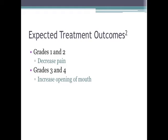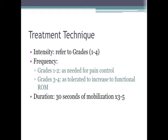In summary, primary outcomes with grades 1 and 2 mobilization include a decrease in pain, and with grades 3 and 4, an increased range of motion. The intensity refers to the grade of mobilization being provided and will be dependent on your desired outcomes. The frequency for grades 1 and 2 is as needed for pain control, and for grades 3 and 4, as tolerated or until there are no longer any improvements. Treatment is initially performed for 30 seconds and then reassessed, continuing to mobilize 3 to 5 times, increasing the time as necessary.